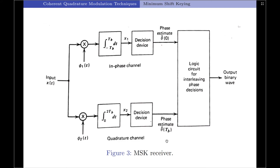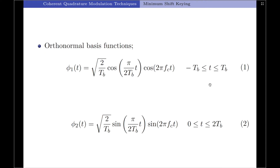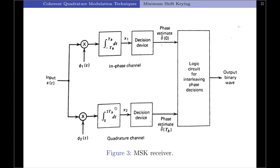Let us now move on to the MSK receiver. The received noisy MSK signal X(t) is correlated with two locally generated replicas of the coherent reference signals phi1(t) and phi2(t) respectively. In both cases, the integration interval is 2tb seconds, matching the 2-bit duration of the basis functions. Also note that the quadrature channel is delayed by 1·tb seconds with respect to the in-phase channel. A multiplier followed by an integrator is a correlator, so there is a correlator in the upper branch as well as in the lower branch.